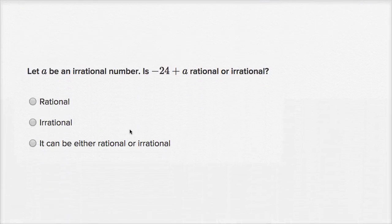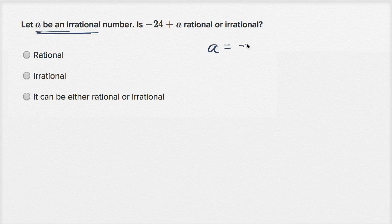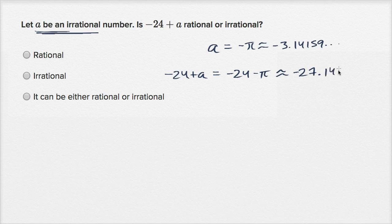We're told let A be an irrational number. Is negative 24 plus A rational or irrational? Let's try some values. What if A was equal to negative pi, which is approximately negative 3.14159, going on forever and never repeating? Then negative 24 plus A would be negative 24 minus pi, which is approximately negative 27.14159 — and the decimal expansion never repeats, so this looks irrational.